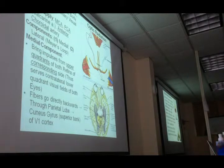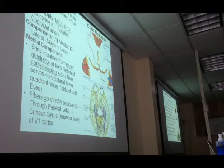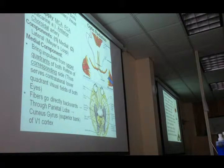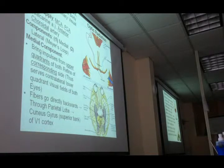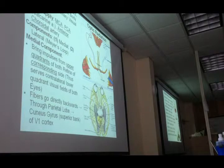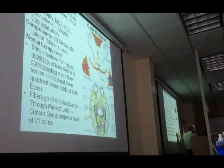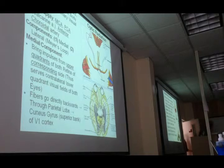The visual pathway starts from the retina, then the optic nerve, optic chiasma, optic tract. You can see the optic tract winding around the cerebral peduncle of the midbrain.